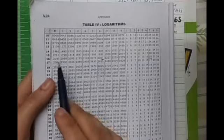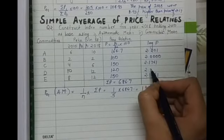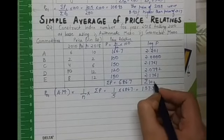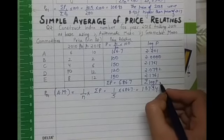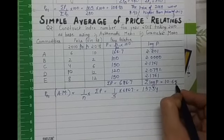For 120, we will look into the log table, 12, 0. It will be 2.0792. So the sigma log P will be 10.6515.